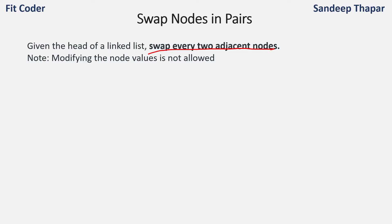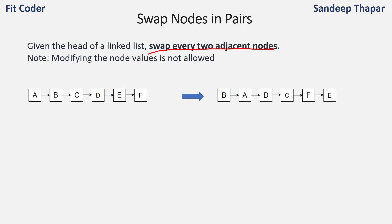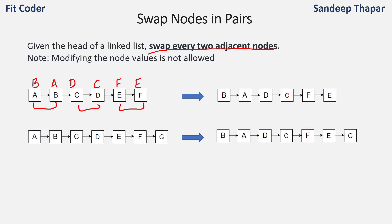Let's see a few examples to understand it. We are given a linked list and if we swap every two adjacent nodes we get BADCFE. So A and B are adjacent so they will be swapped to BA, similarly CD will be swapped to DC and EF will be swapped to FE. This was when there are an even number of nodes — all pairs can be swapped. But if there are odd number of nodes then a single node at the end will be left out.